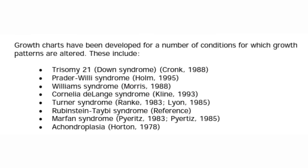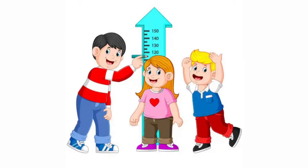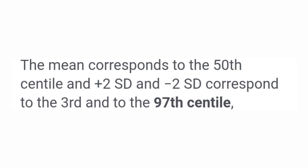WHO uses standard deviation definitions: minus 2 SD to plus 2 SD. In CDC charts, only centiles are given — 5th, 10th, 25th, 50th, 75th, 95th. Less than 3rd centile corresponds to minus 2 SD, and more than 97th centile corresponds to plus 2 SD.